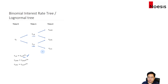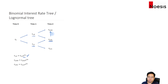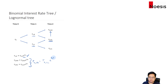For period 2 we can also establish the same relationship between every adjacent node. If you know the value of the interest rate at r sub 2LL, you can multiply by e to the power of 2 sigma to get the interest rate at node HL. Similarly, from node HL you can determine the rate at node HH. Combining these relationships, r at period 2 for HH equals r at period 2 for LL multiplied by e to the power of 4 sigma.